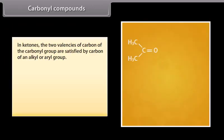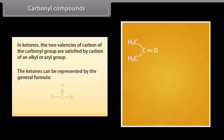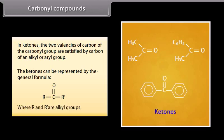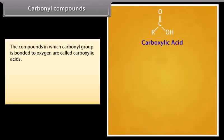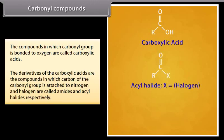In ketones, the two valencies of carbon of the carbonyl group are satisfied by carbon of an alkyl or aryl group. Ketones can be represented by the general formula R-CO-R', where R and R' are alkyl groups. The compounds in which carbonyl group is bonded to oxygen are called carboxylic acids. Derivatives of carboxylic acids in which carbon of the carbonyl group is attached to nitrogen and halogen are called amides and acyl halides respectively.